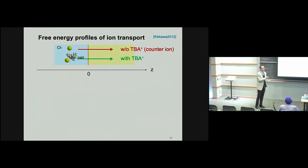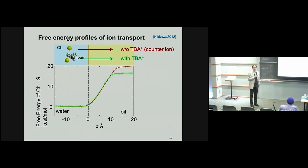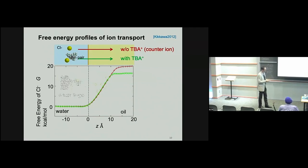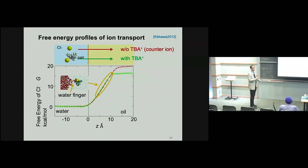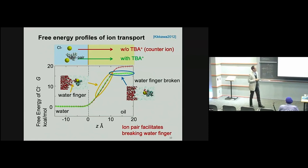We investigated the free energy profile of ion transport without and with tetrabutylammonium, as a function of the Z coordinate normal to the interface — the negative region is water, the positive region is oil. Cl⁻ is a very hydrophilic ion, so it is unstable in the oil phase. As the ion moves to the oil phase, the free energy first increases while the water finger forms and elongates, then at some point the water finger breaks. We found that the breaking point of the water finger was influenced by the presence of the counter ion — the ion pair facilitated breaking of the water finger.